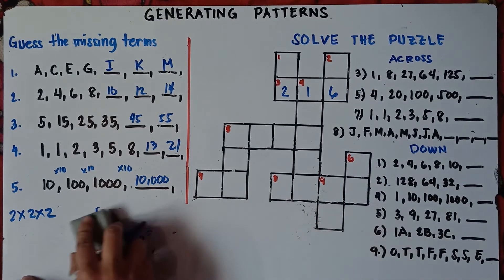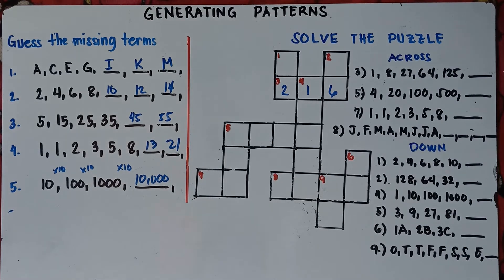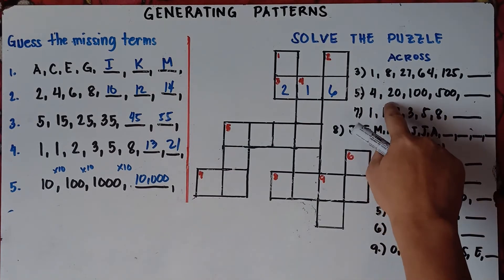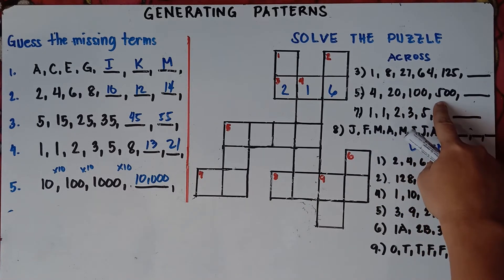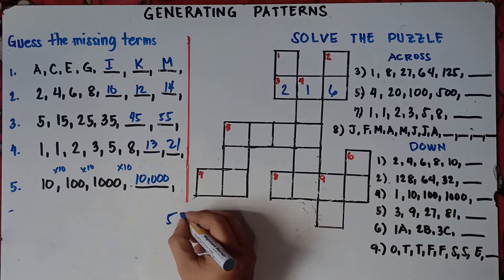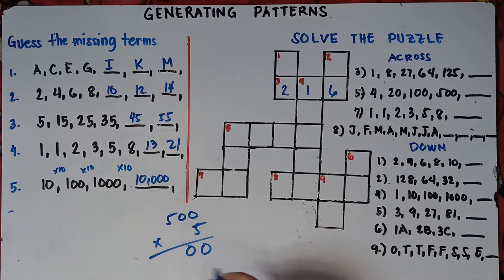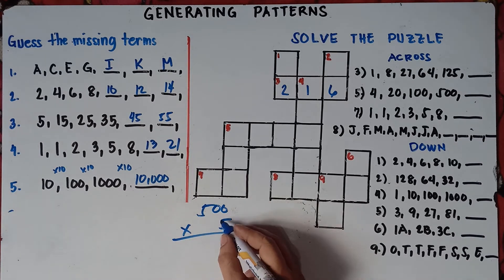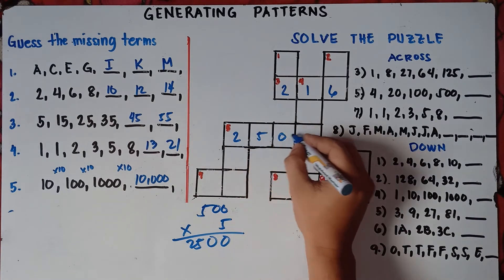Let's try number 5 across. We have 4, 20, 100, 500. We multiply by 5 each time: 4 times 5 is 20, 20 times 5 is 100, 100 times 5 is 500. So 500 times 5 is 2,500. The answer for number 5 across is 2,500.